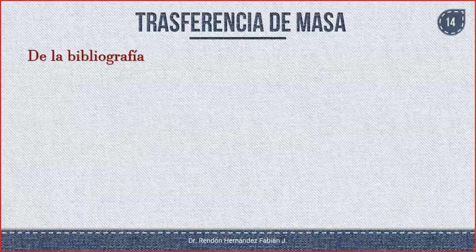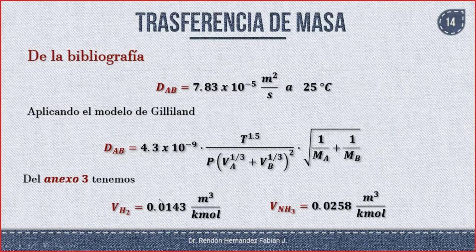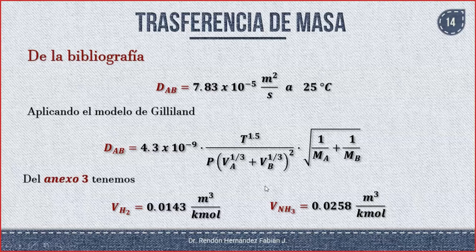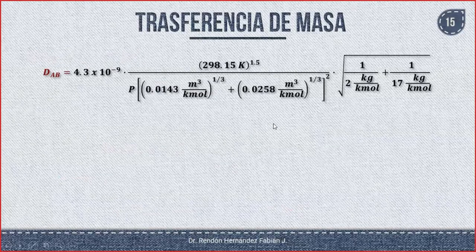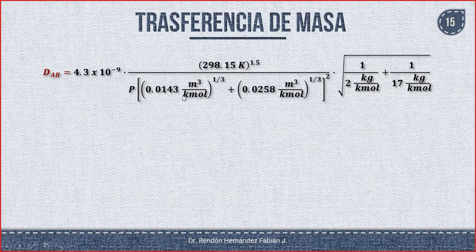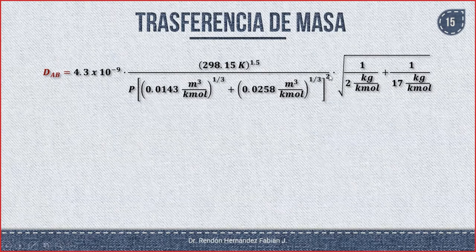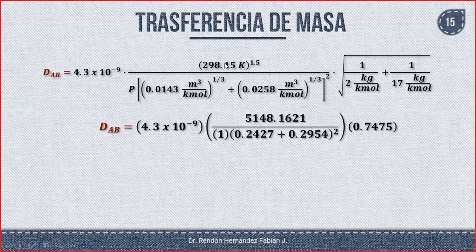Regresando a la presentación: del anexo 3 encontramos que el volumen del hidrógeno es 0.0143 m³/kmol y para el amoníaco 0.0258 m³/kmol. Ya tenemos todos los datos; hay que hacer operaciones. Sustituimos todos los valores en el modelo de Gilliland. No se te olvide que la temperatura está elevada a 1.5, y los volúmenes están elevados a 1/3, y todo el denominador elevado al cuadrado.